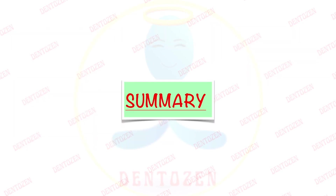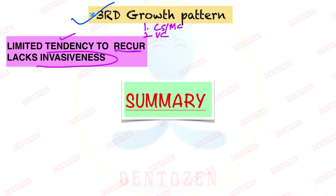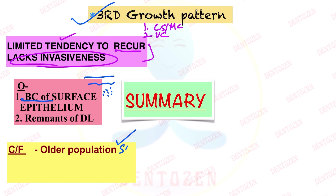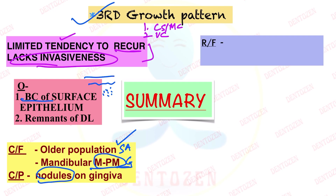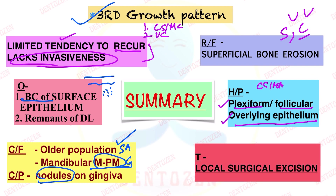Let's quickly summarize. This is the third growth pattern of ameloblastoma after conventional solid or multicystic type and unicystic type. It is considered a separate type because it has limited tendency to recur and lacks invasiveness. Its origin can be from the basal cell of the surface epithelium or from the remnants of dental lamina. It is seen in an older population and affects the mandibular molar and premolar region. Gingiva is the most common site. Radiographically it can cause superficial erosion called saucerization or cupping. Histopathologically, plexiform or follicular patterns are seen in the connective tissue along with the overlying gingival epithelium. Local surgical excision is the treatment.